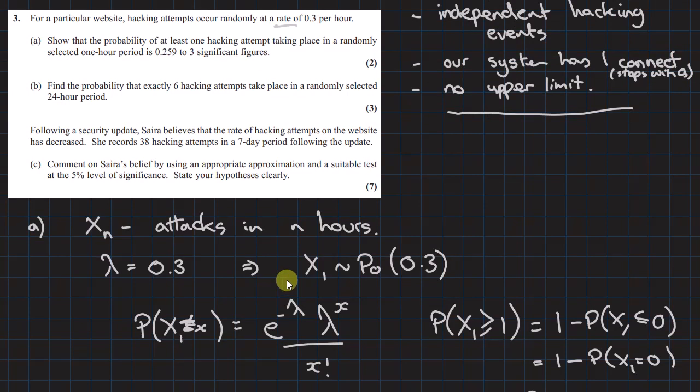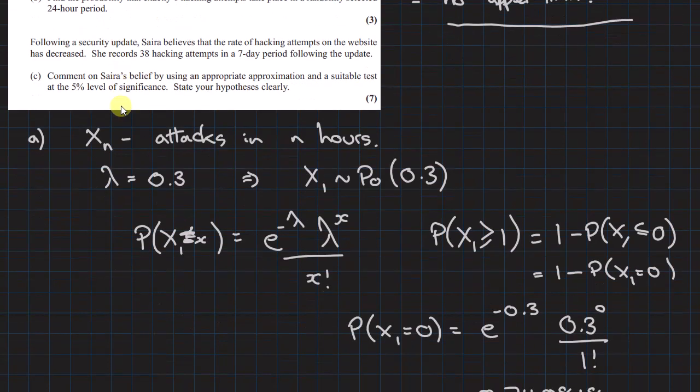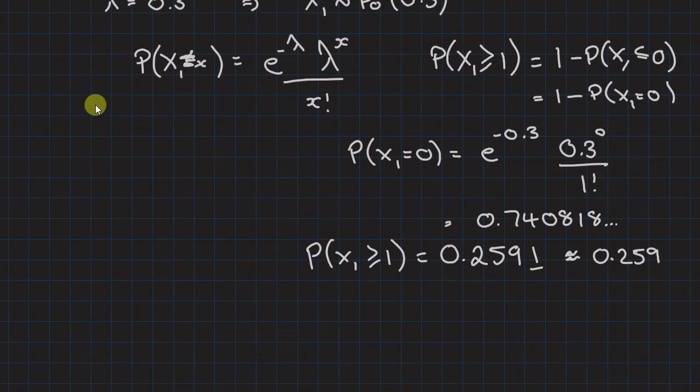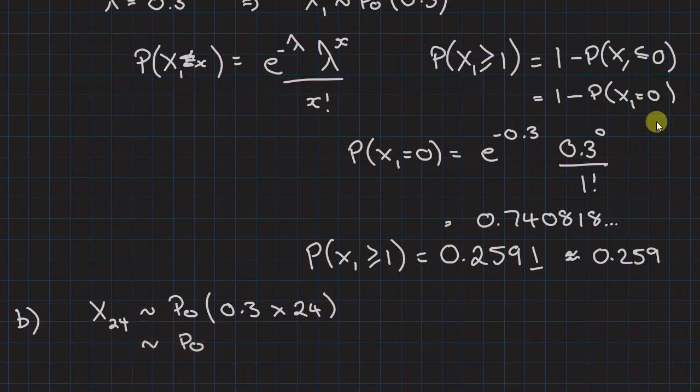Part b: Find the probability that exactly six hacking attempts take place in a randomly selected 24 hour period. So this is a different distribution, X24, and that is a Poisson of 0.3 times 24. So my Poisson distribution is 7.2, and if I go to the tables there are no values for lambda 7.2 so I can't use that.